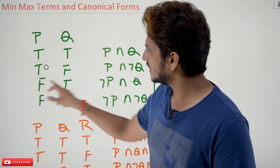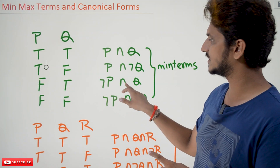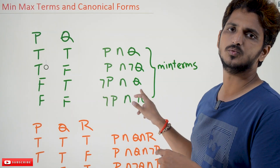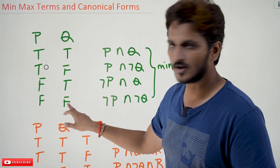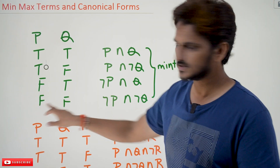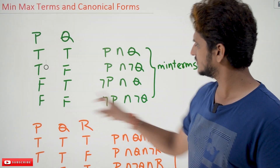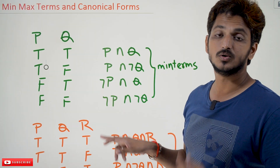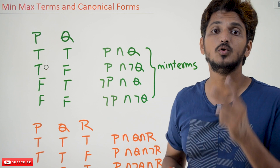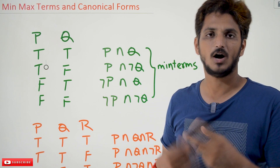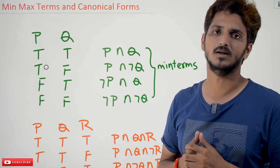Similarly, false-true: false means negation P, conjunction, true means Q. False-false: false means negation P, conjunction, false means negation Q. So these are the Min Terms available for two variables. How many Min Terms are available? Four Min Terms are available.